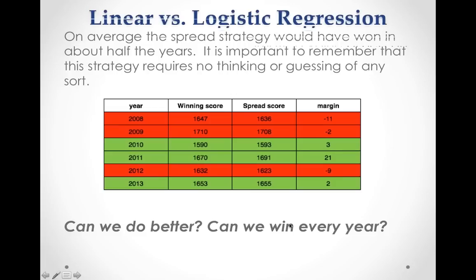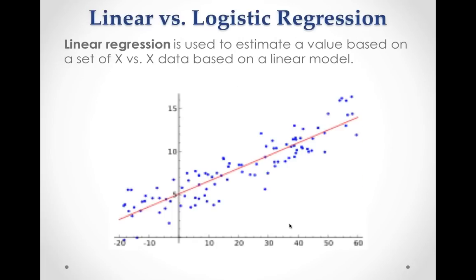Now let's go into a little bit of math — nothing hard, hopefully no equations that scare anybody. In machine learning we use a technique called logistic regression. Before that, let's mention linear regression, which is designed to estimate one value based on another. You have an XY coordinate plane with a scatter plot of points following a general trend, and for any given X value you can guess what Y should be based on the line through the data. That's a linear model.